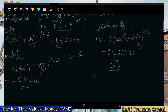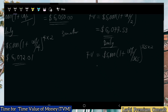For daily: future value equals five thousand dollars into bracket one plus ten percent divided by three hundred and sixty-five — because there are 365 days in a year. The n becomes three hundred and sixty-five, raised to the power of three hundred and sixty-five multiplied by two. With your calculator you should get approximately six thousand, one hundred and six dollars and eighty-five cents.